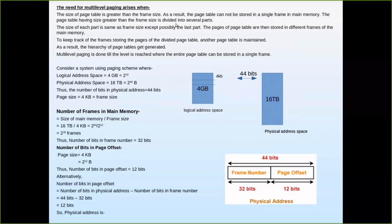The page table having size greater than the frame size cannot be stored in a single frame in main memory. You have to divide it according to the page size and put that in the frame. The size of each divided part is the same as the frame size, except possibly the last part. The pages of the page table are then stored in different frames of the main memory, and to keep track, another page table — a hierarchy — has to be maintained.